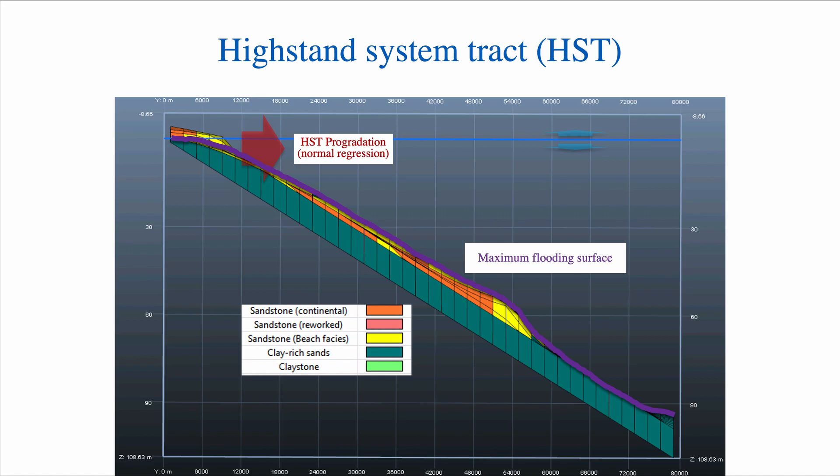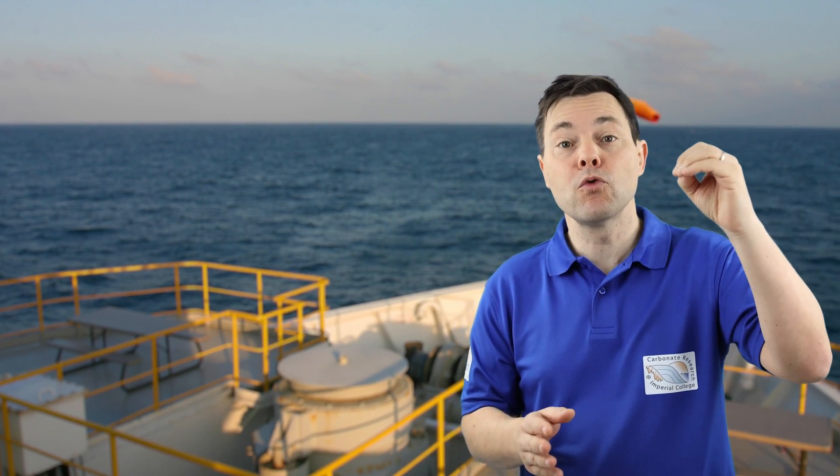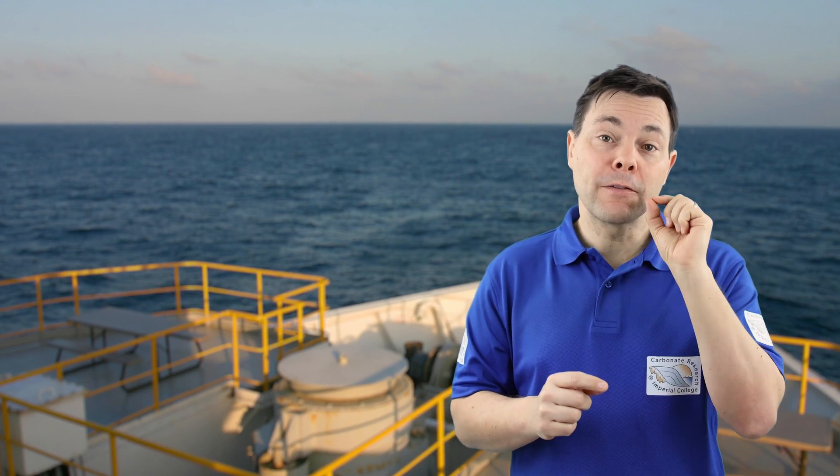Notice that this implies a change in the direction of the shoreline. During the transgressive system tract, the shoreline was moving on land, going up onto the continent. But above the maximum flooding surface, because we have a normal regression, that shoreline is now moving towards the basin again — it's prograding into the basin. So the maximum flooding surface is easy to spot on seismic lines, because if you can spot the shoreline, you will see a change in the trajectory of the shoreline.